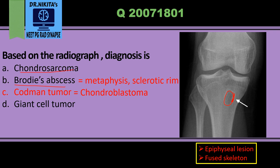Chondrosarcoma versus chondroblastoma: chondrosarcoma is a malignant lesion seen in older age, while chondroblastoma occurs in younger patients, generally under 20 years, more commonly in males, in an unfused skeleton. This summarizes the key differentials for lesions in bone.